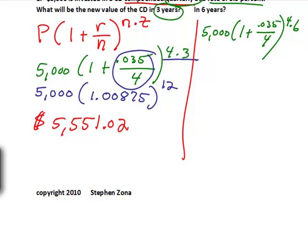My next line becomes 5,000, same parentheses, 1.00875, and 4 times 6 is 24. Multiply that all out and for a final answer, you get $6,162.76.